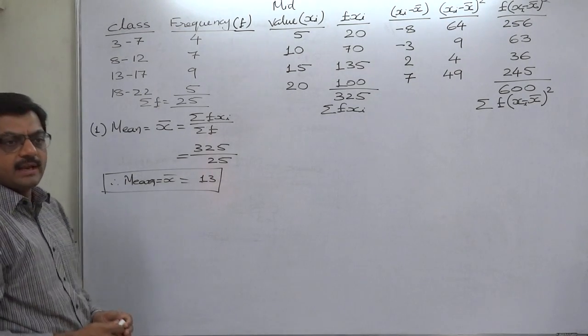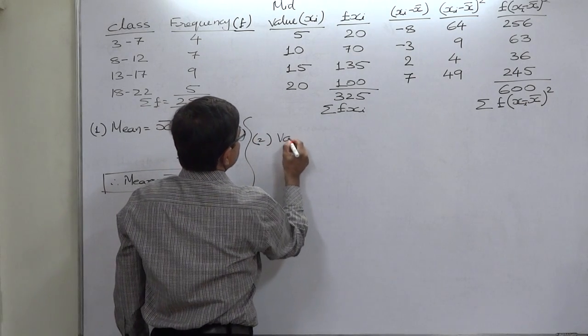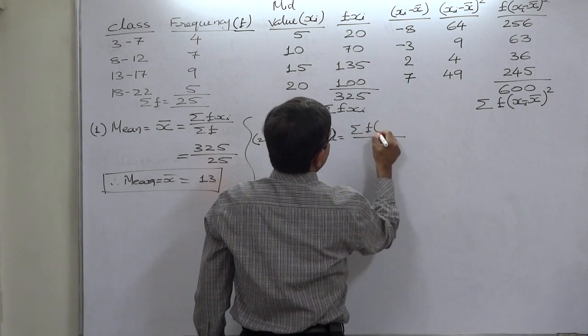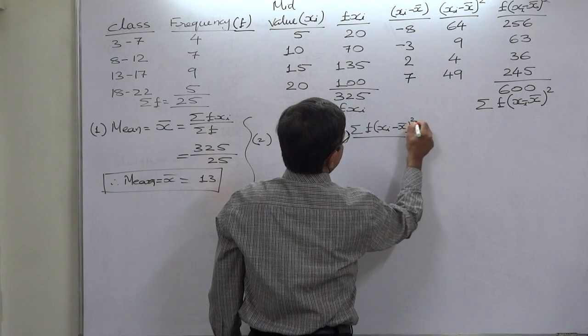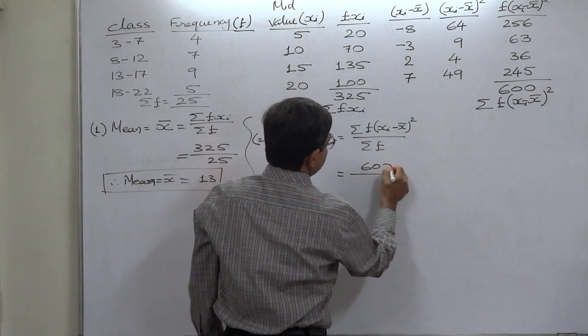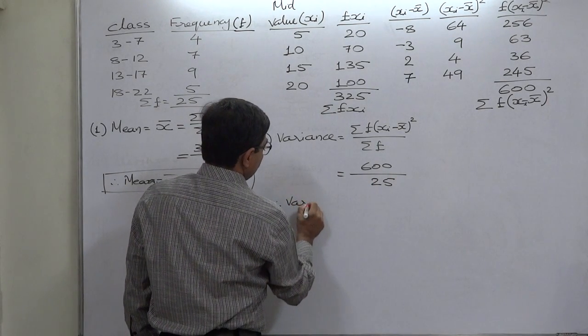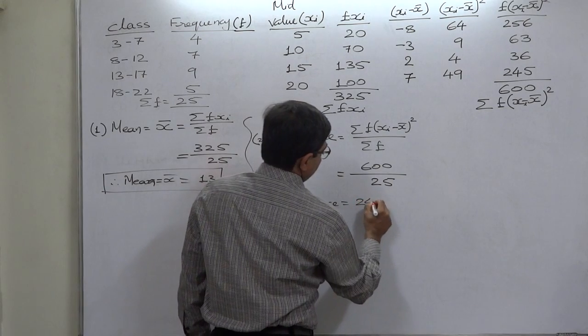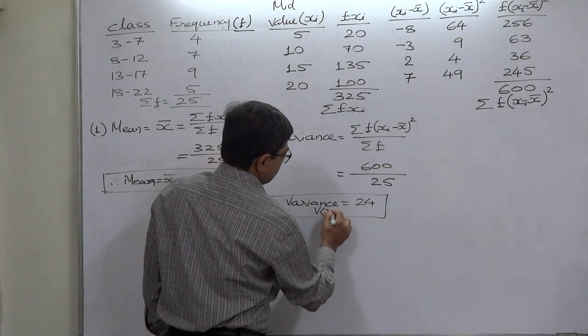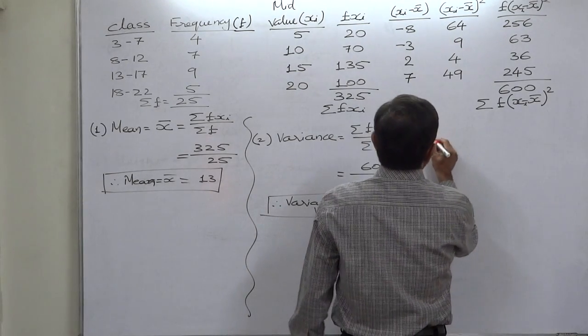That means now we can calculate the variance. Variance equals sigma f into x minus x bar whole square divided by sigma f or n. That means 600 divided by 25, so the variance comes to 24. We can use sign V of x for variance of variable x.